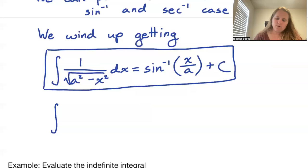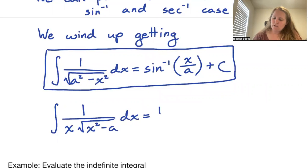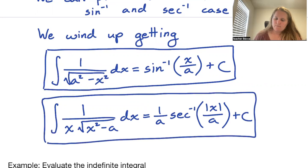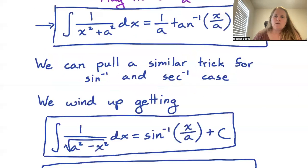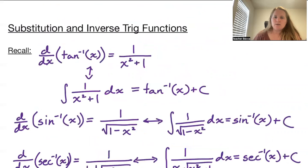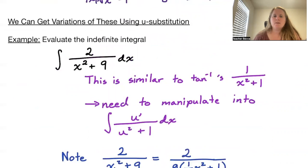We also get that the integral of 1/(x√(x² − a²)) dx, with the square root also in the denominator, is equal to (1/a) · sec⁻¹(|x/a|) + c. I should note that I missed an absolute value in the original formula above — we should have sec⁻¹(|x|) in that earlier expression as well.